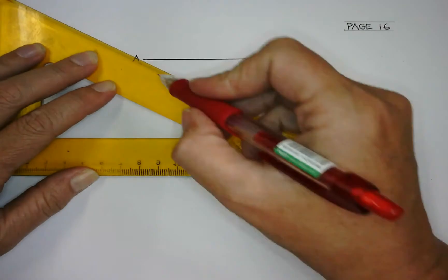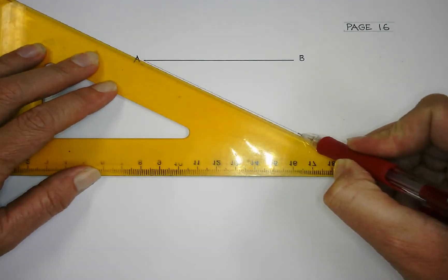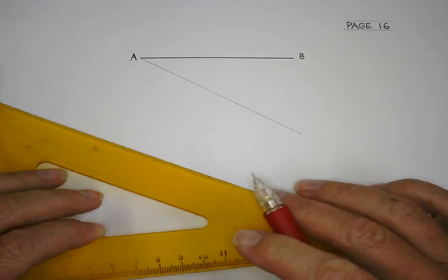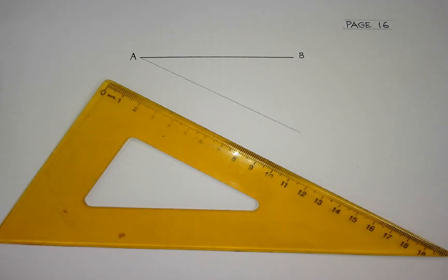We are going to draw a connector from A to C at any angle, and we are going to divide it into any number of parts.